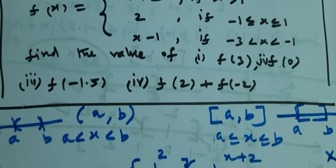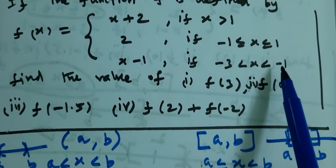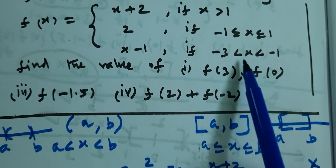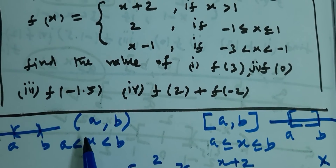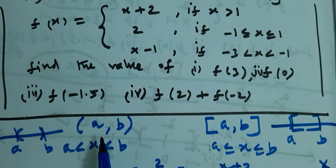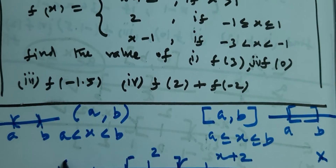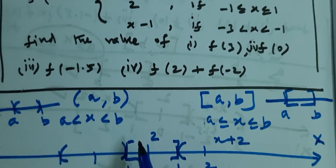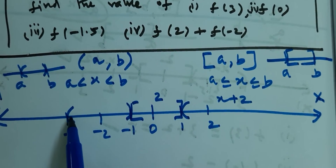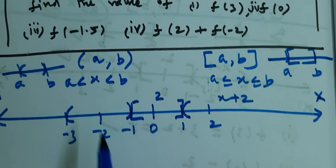So for minus 1 to plus 1, it is a closed bracket, and the function value is 2 — x will be 2. Next, for minus 3 to minus 1, minus 3 less than x less than minus 1, there is no equal-to symbol, so the bracket is open. Open interval: from minus 3 to minus 1.